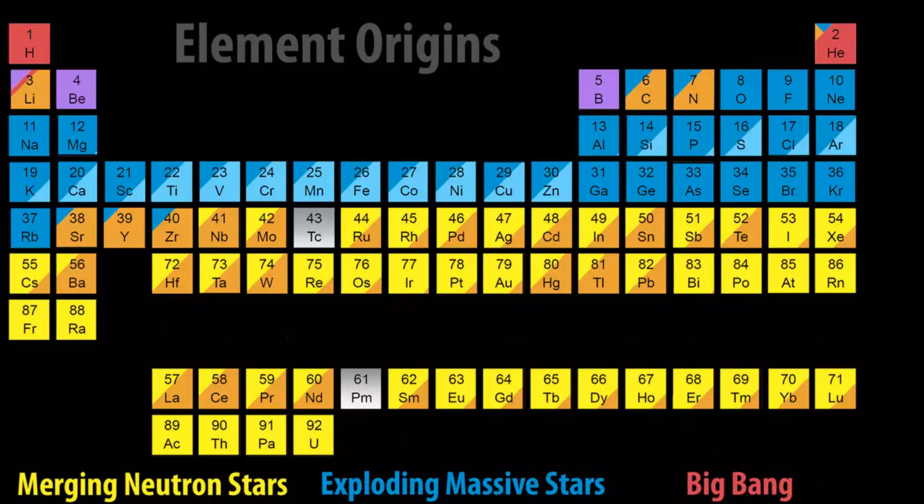This was the confirmation for us that this right here is how pretty much most of the heavy elements in the universe are made. Here's actually a kind of a revised version of the table of elements where you can see that the merging neutron stars are responsible for producing quite a lot of various elements and some of them like polonium are actually only made when two neutron stars merge.